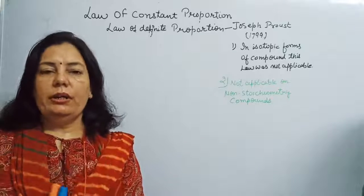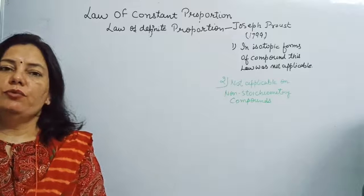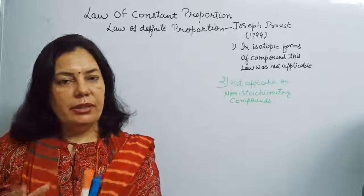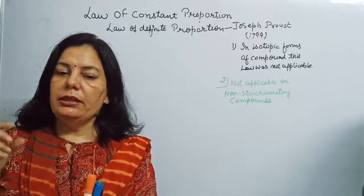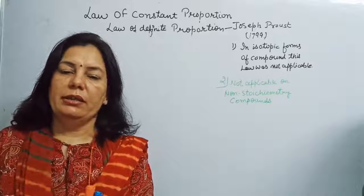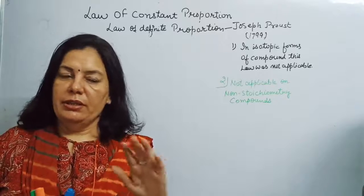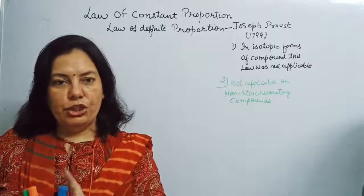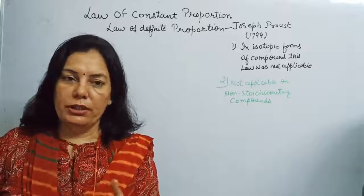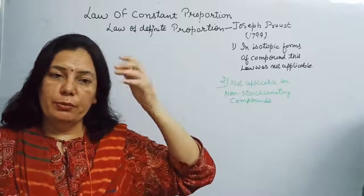One more limitation of the law of constant proportion is that sometimes similar elements react with each other in the same ratio or same proportion by their mass, but they form different compounds. This is again a violation of the law of constant proportion.